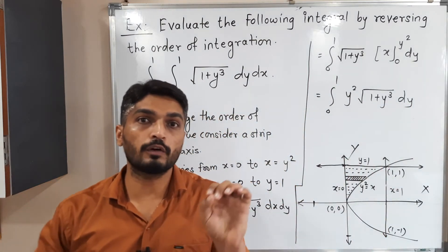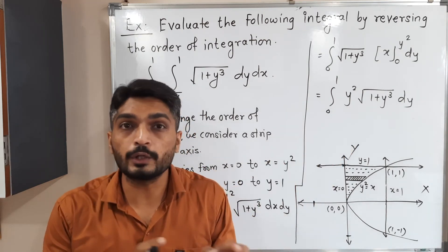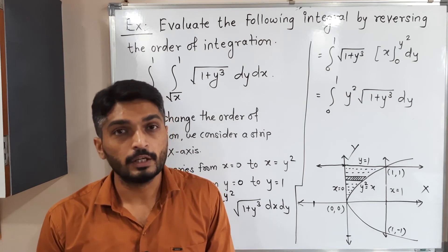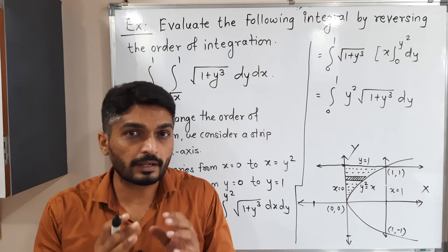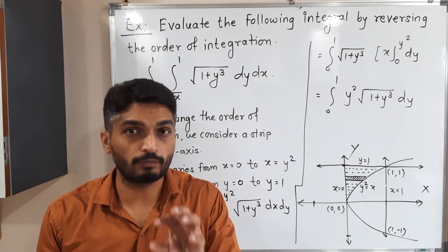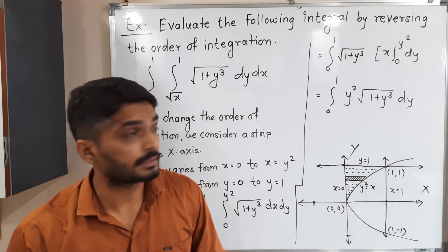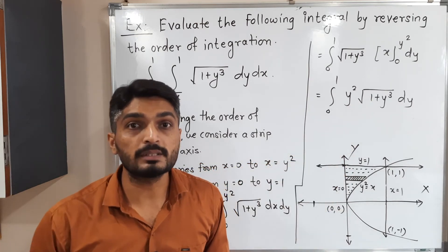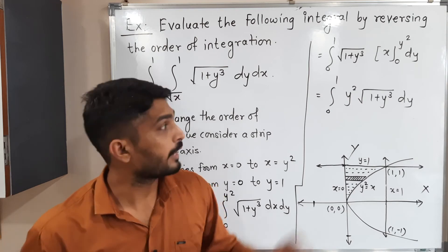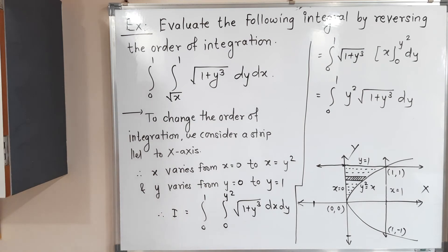We have a product of two functions and one of them involves a square root, so we cannot use a standard product formula. We need a substitution. We notice that the derivative of y³ is 3y², and y² is already present in the integrand, so we substitute t = 1 + y³.